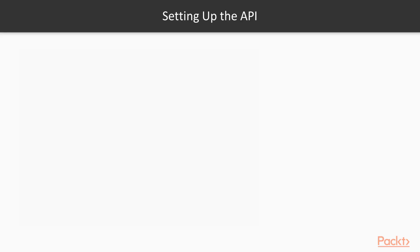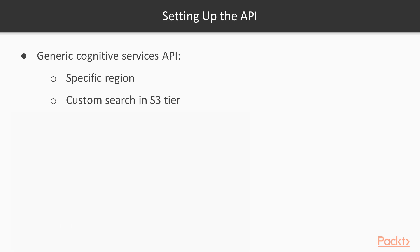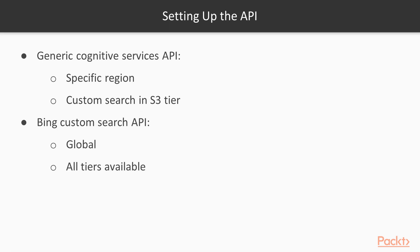Let's start with setting up the API. There are several ways of setting up custom search. You can create a generic cognitive service account to use several APIs. Then you are able to select a specific region and the pricing is based on the S3 tier. In our video we are creating a specific API key for the custom search API, allowing us to choose from the full range of pricing tiers and use the global endpoint.